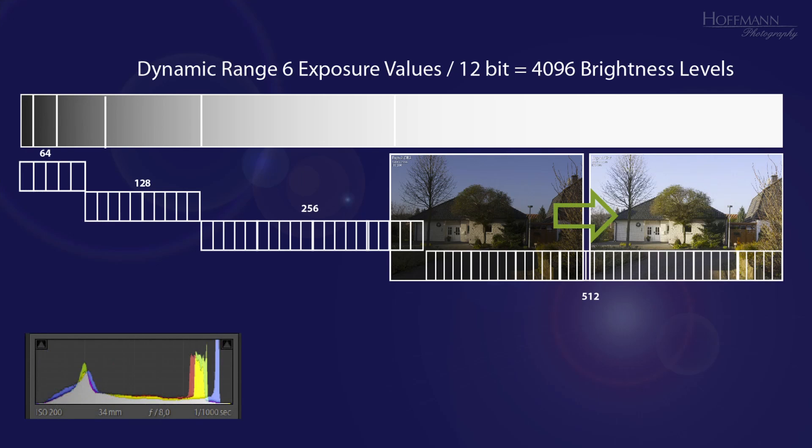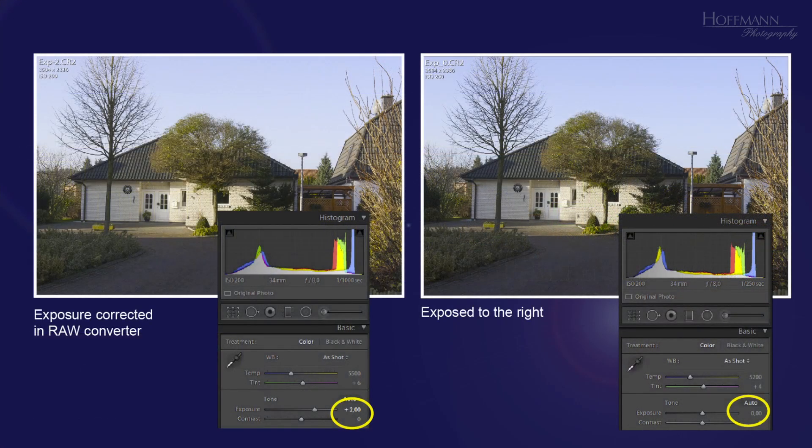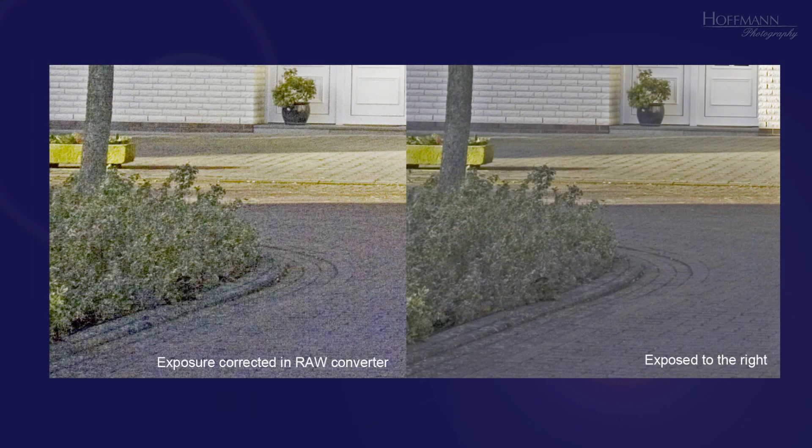But here is a comparison of the photo with the exposure corrected in post, and one that was exposed to the right in camera. Note that in the case of the correctly exposed image, the exposure slider still is on zero. Both photos look quite similar and the histograms are almost identical. What else could you ask for? But let's take a closer look at this dark area here. Increasing the brightness in the raw converter resulted in quite a lot of noise, despite an ISO setting of just 200. The reason for that noise is of course the limited number of discrete brightness levels that had to be stretched towards greater brightness. This affects mostly the dark areas, while the bright areas, like the front door of the house, remain largely unaffected.